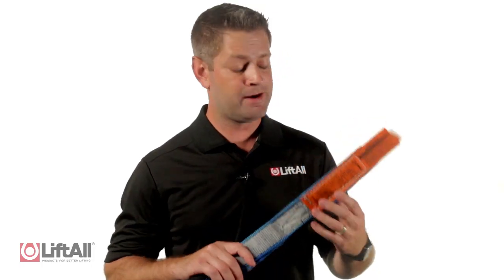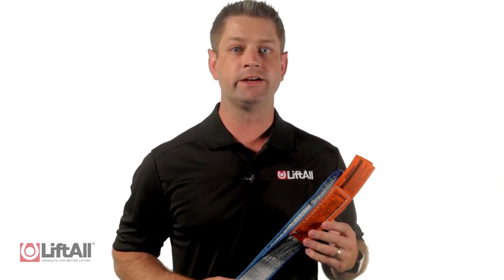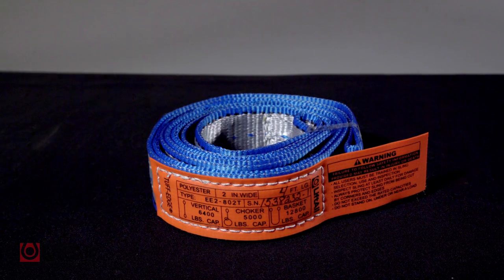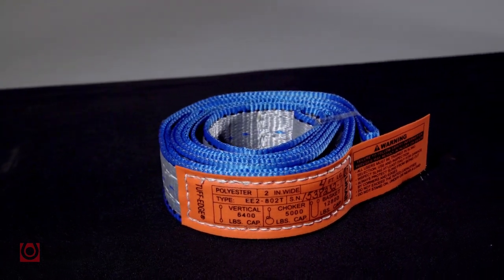Next we have our new patent-pending Tough Edge 3 slings. The patent-pending design combines a twill weave body for improved abrasion resistance and a tubular edge design to resist edge cutting.